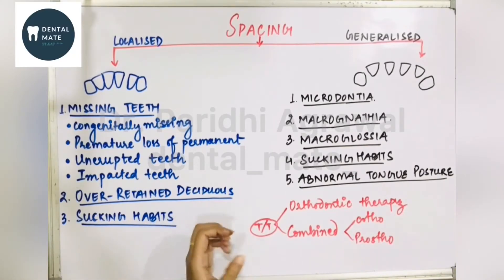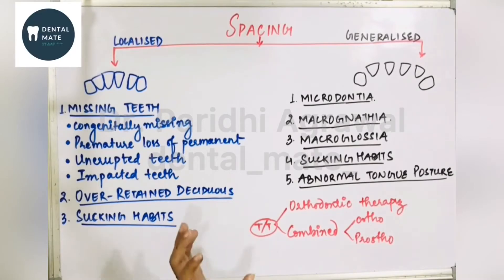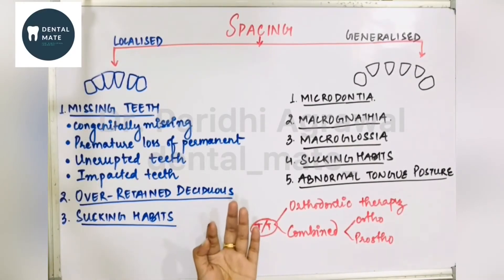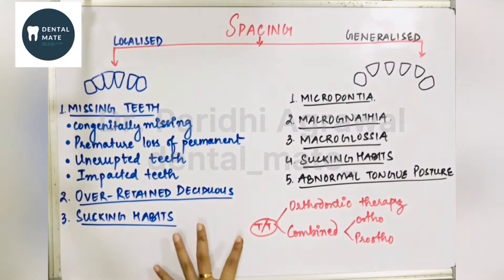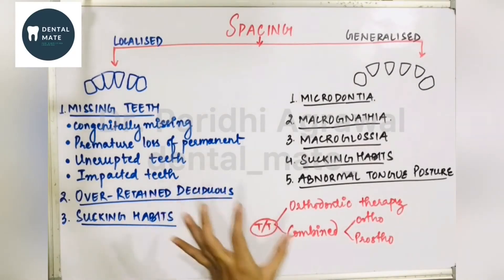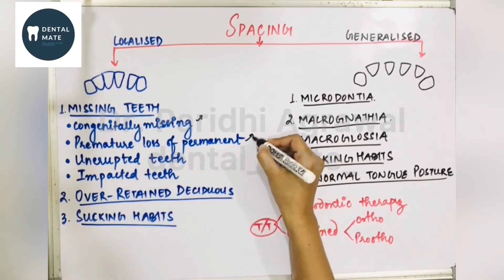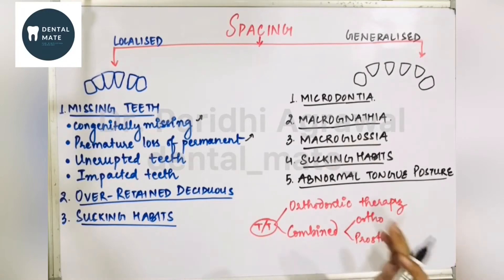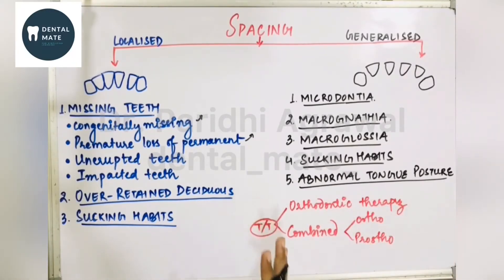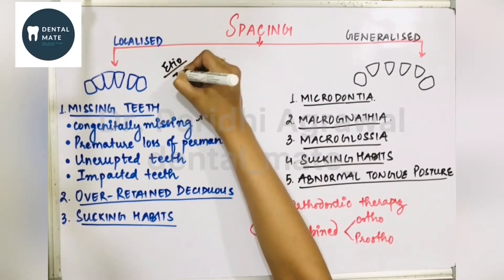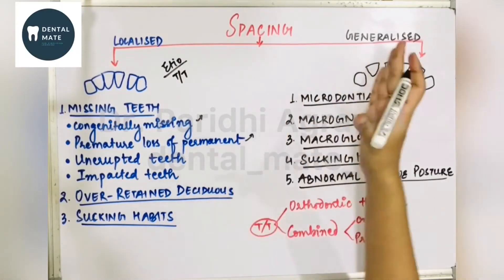Localized spacing is present in a localized region or area. The etiology of localized spacing could be: a missing tooth, a prolonged over-retained deciduous tooth, or sucking habits. Regarding missing tooth — it could be congenitally missing. If the tooth is congenitally missing (not present by birth), there is localized spacing restricted to a particular spot. There could also be premature loss of a permanent tooth due to caries or periodontal problems.